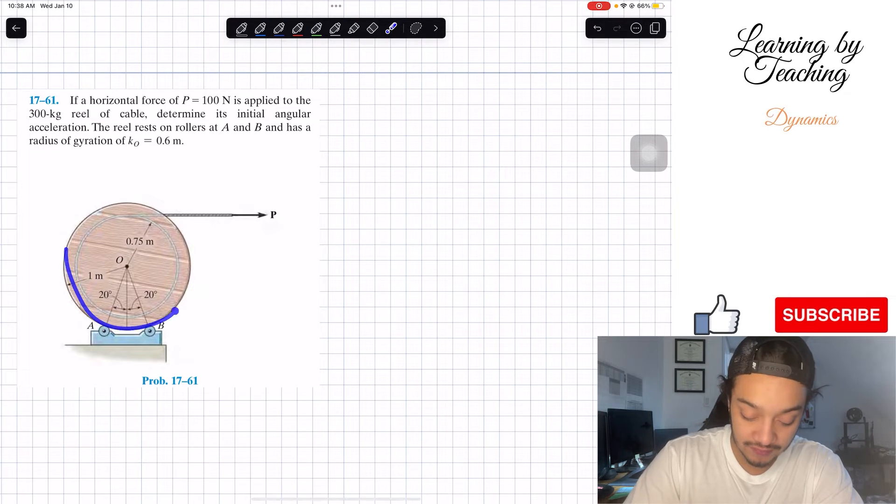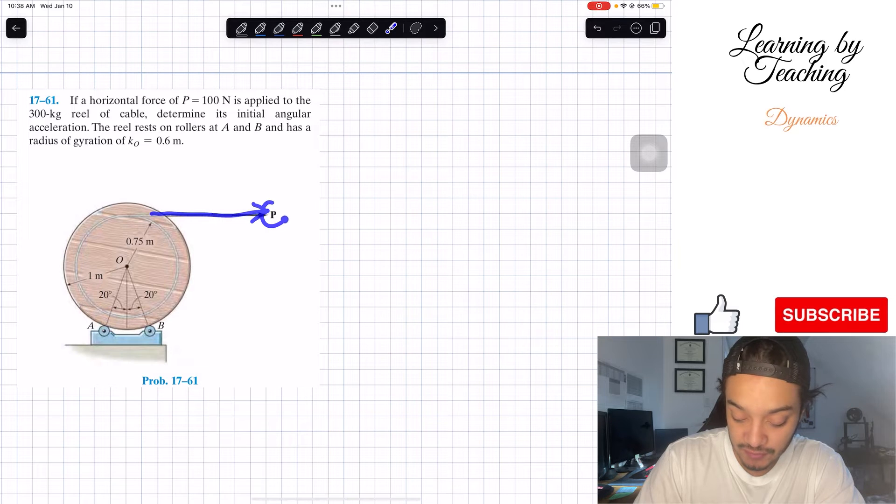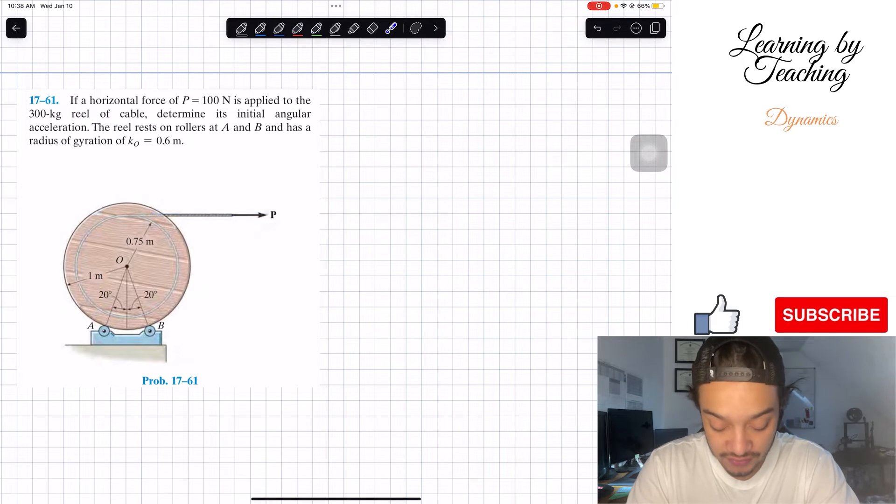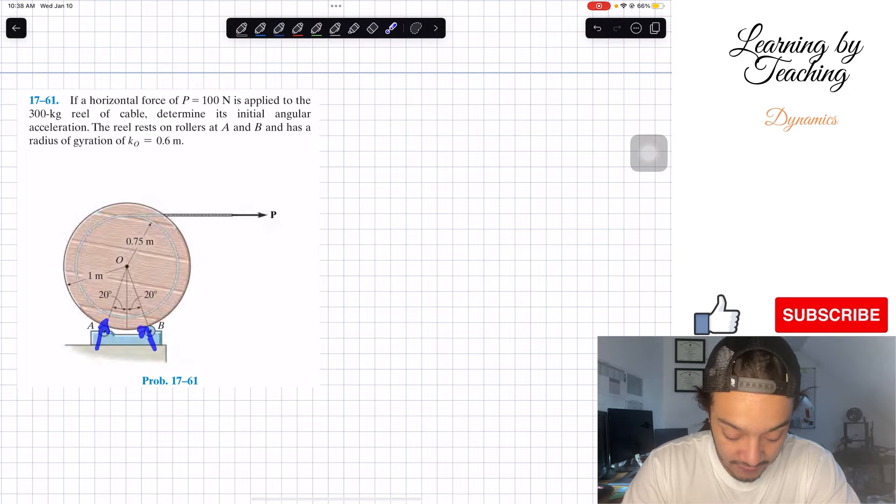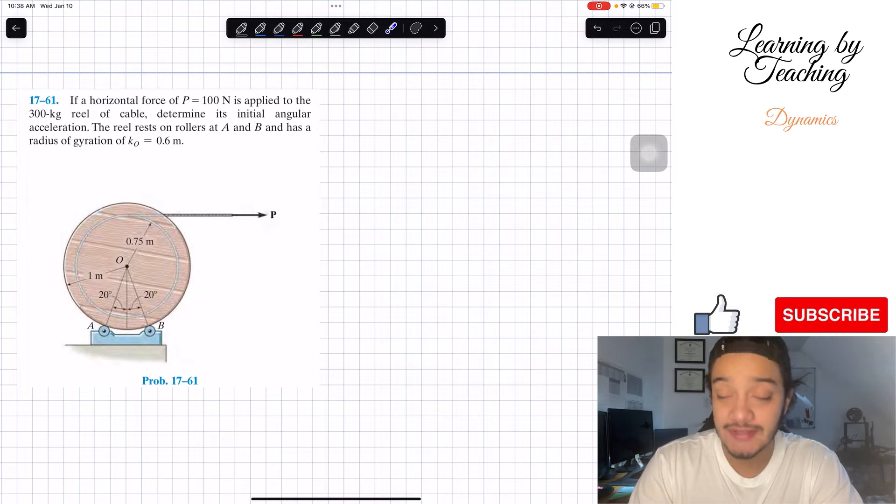So what do we have in here? We have this rail with attached rope, and this rope is applying this force P which is equal to 100 N. We're also told that we have normal forces where our rail is resting at A and B, and we're asked to find the angular acceleration.